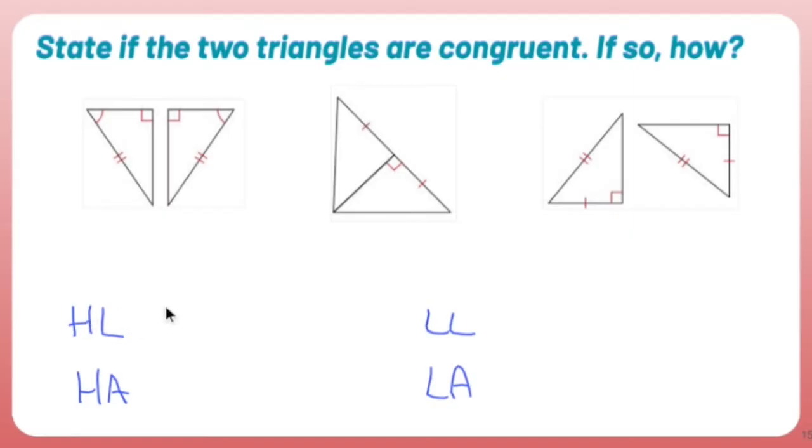What does HL mean? HL means hypotenuse leg. If I give you two right triangles, and I show you that one of the legs is congruent, and the hypotenuse are congruent, that's enough information for me to say these two triangles are congruent to each other.